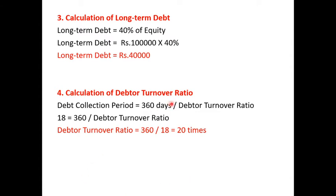Next, calculation of debtor turnover ratio. Average collection period, also called debt collection period, is given as 18 days, and the problem uses 360 days in a year. So we change the formula: debt collection period = 360 ÷ debtor turnover ratio. That is, 18 = 360 ÷ debtor turnover ratio. Therefore, debtor turnover ratio = 20 times.